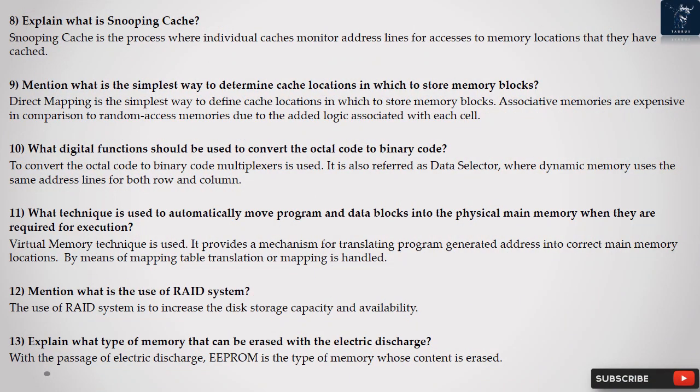Question 8: Explain what is snooping cache? Snooping cache is the process where individual caches monitor address lines for accesses to memory locations that they have cached.